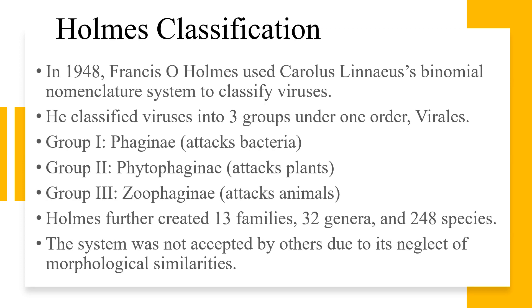In 1948, Francis O. Holmes classified viruses using Carolus Linnaeus's binomial nomenclature system. He classified viruses into three groups under one order, Virales. Group 1, Phaginae, included viruses which attack bacteria; Group 2, Phytophaginae, those which attack plants; and Group 3, Zoophaginae, viruses which attack animals. Holmes further classified viruses into 13 families, 32 genera, and 248 species. However, Holmes's classification was not accepted by others due to its neglect of morphological similarities.